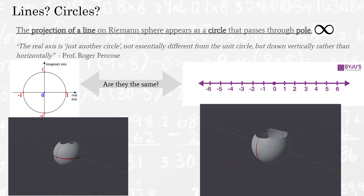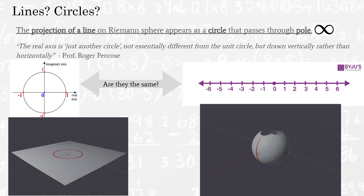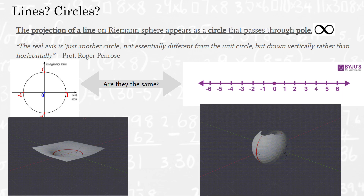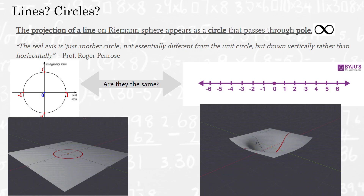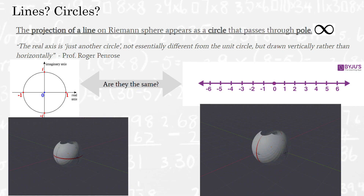Actually, the real axis is just another circle if we consider it from a Riemann sphere perspective — it's not essentially different from a unit circle in the complex plane; it's rather just drawn vertically rather than horizontally. As Professor Roger Penrose said in his book 'Road to Reality': the unit circle on your complex plane and the real axis have the same geometric properties when considered in a Riemann sphere representation.